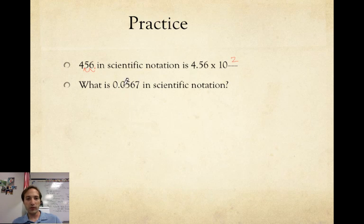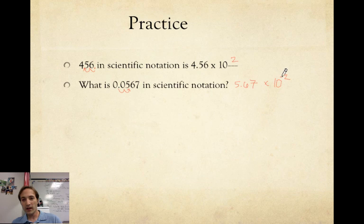So our next example is .0567. This number is much less than one, so it's going to have a negative exponent. Here's our decimal point. So we go one, two spots to the right. That's going to give us 5.67 times 10. Move the decimal two spots, so that's an exponent of two. And as I said, we're going to the right, and it's less than one, so it's a negative exponent. Here's our negative.